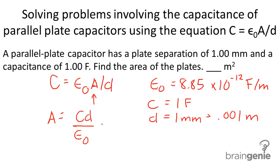So once we plug in this info we get 1 times 0.001 over 8.85 times 10 to the negative 12th and we get a value of 1.13 times 10 to the 8th meters squared.